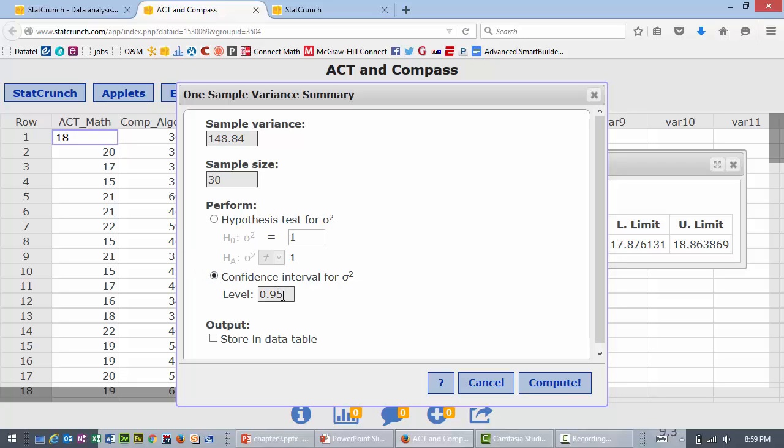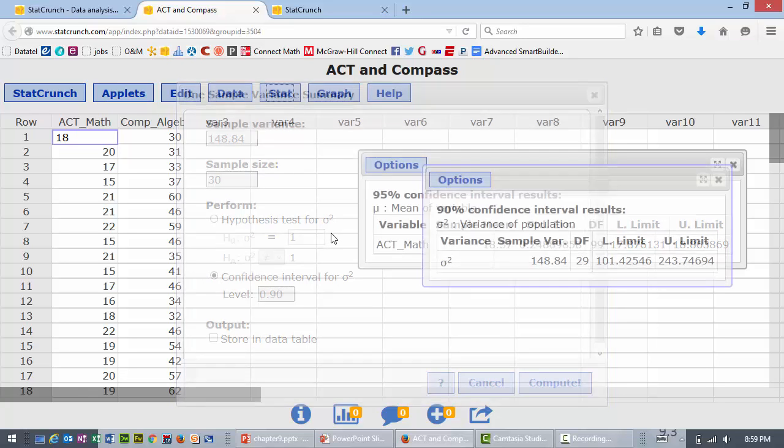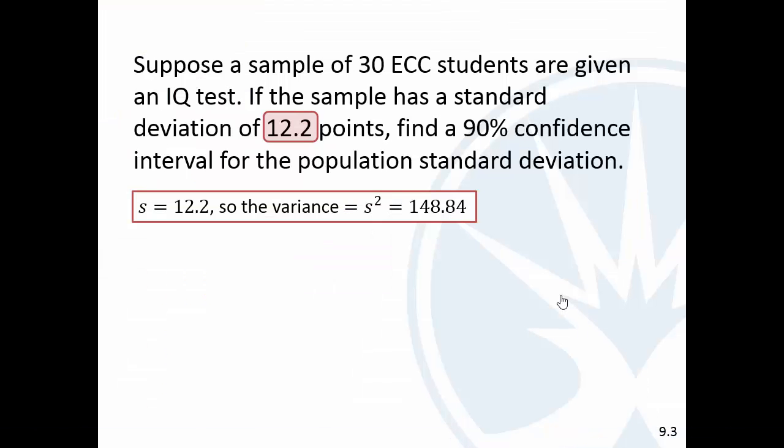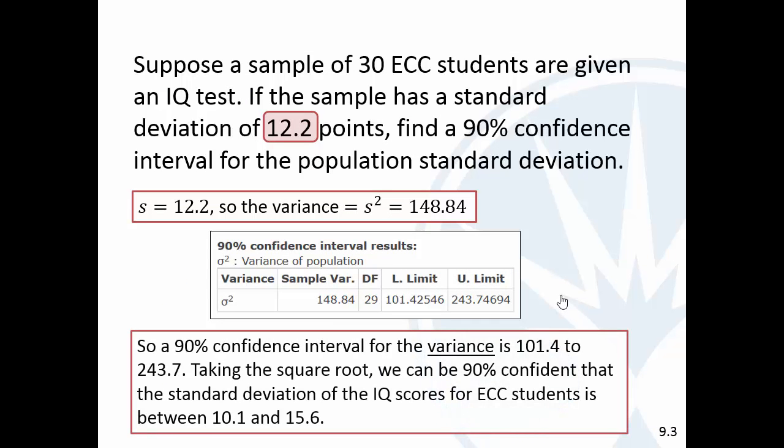So here we have our results. The variance—this is the variance—this is the confidence interval for the variance: 101.4 to 243.7.